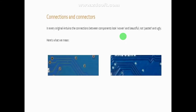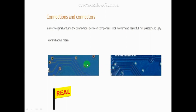Now let's talk about the most important point, which is the board's finishing. Here you can see that one is real and one is clone. So friends, we have seen the Arduino board, how many types of boards Arduino company makes, and the differences. If we find an original Arduino board that's great, but if found locally or online it may not be the original — however, you can also use the clone.